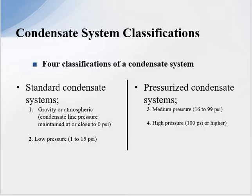When looking at a condensate system, we have to do the classifications. There are four classifications: one is a standard condensate system, which is gravity or atmospheric — condensate line pressure maintained at or close to zero PSI, which is very important on many process applications. The second is low pressure, one to fifteen PSI. Today's technology also includes pressurized condensate systems operating at sixteen to ninety-nine PSI for medium pressure, and high pressure over one hundred PSI.